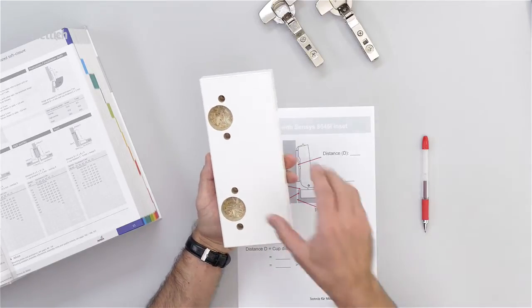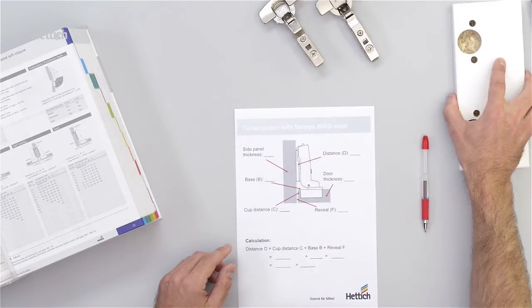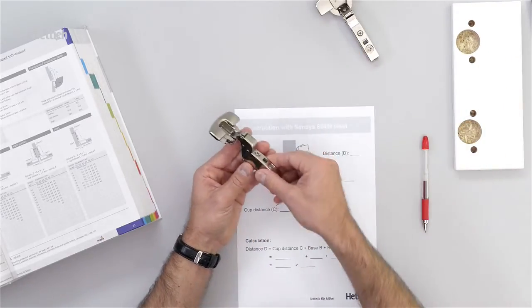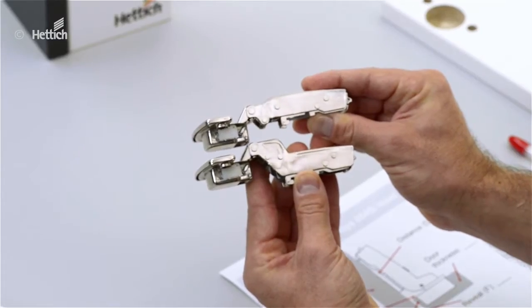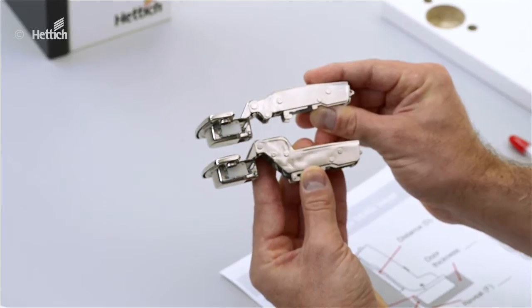Also the base B, which is the value for the different shape of the hinge arm.